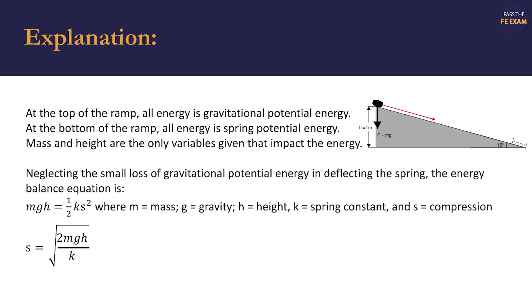We substitute in our values: 1 kg for mass m, 9.81 m per second squared for gravity g, 1 m for height h, and 2,000 N per meter for the spring constant k. We then find that s, the maximum compression of the spring, is equal to 0.099 m or 9.9 cm.